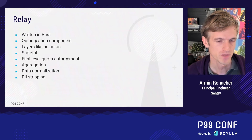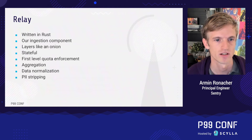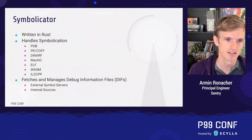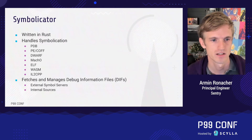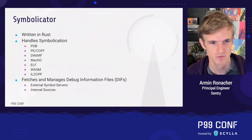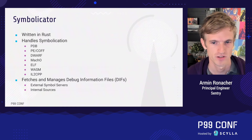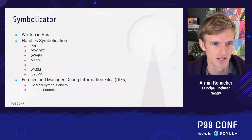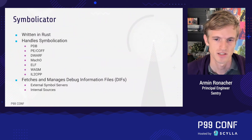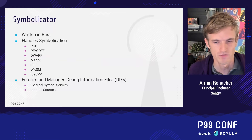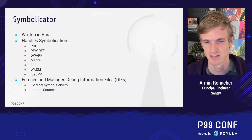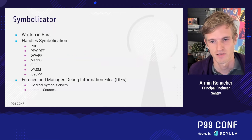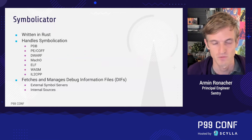Relay is also the first-level quota enforcement system — if a customer sends more data than allocated, we reject it there. It also performs aggregation, normalization, and PII stripping. Symbolicator is an interesting internal service, typically run just on our infrastructure, written in Rust, and it handles symbolication for different data formats. If you've ever had a C++ crash you're familiar with different debug formats: PDB on Windows, DWARF on Mac and Linux, with container formats like PE executables or ELF — we support all of these, leveraging a lot of the Rust ecosystem.